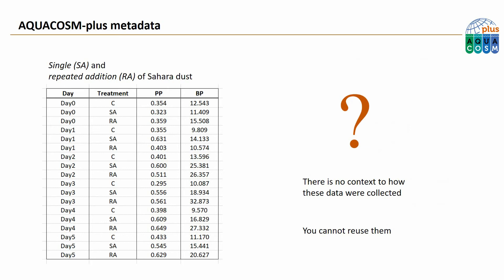To put that in perspective, let's take an example dataset from an old mesocosm experiment where mesocosms received single and repeated additions of Sahara dust. If you wanted to use this dataset, you are lacking important information about the experiment itself, like how much dust was added and how often. Also you don't know how the samples were collected and, most importantly, you don't know what method was used to estimate the primary and bacterial production.